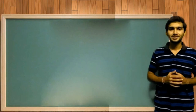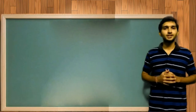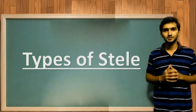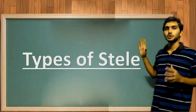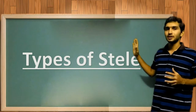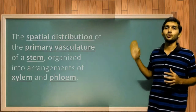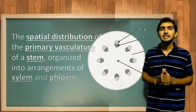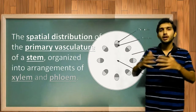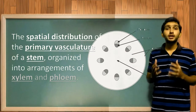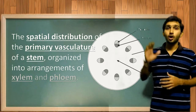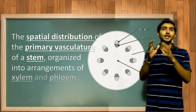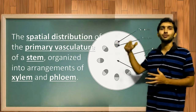Welcome back friends. In today's lecture I am going to explain about types of stele. Before that, a brief introduction: stele is a special arrangement of primary vasculature of a stem, organized into arrangements of xylem and phloem.